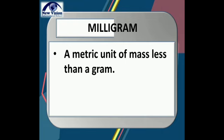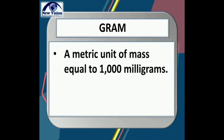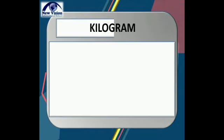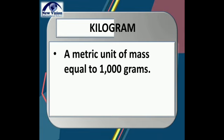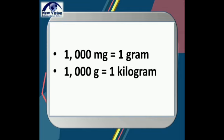Next we have milligram, a metric unit of mass less than a gram. The conversion factor of milligram is 1,000 milligrams equals 1 gram. We also have gram, a metric unit of mass equal to 1,000 milligrams. Our last vocabulary word is kilogram, a metric unit of mass equal to 1,000 grams. So our conversion factors are: 1,000 milligrams = 1 gram, and 1,000 grams = 1 kilogram.